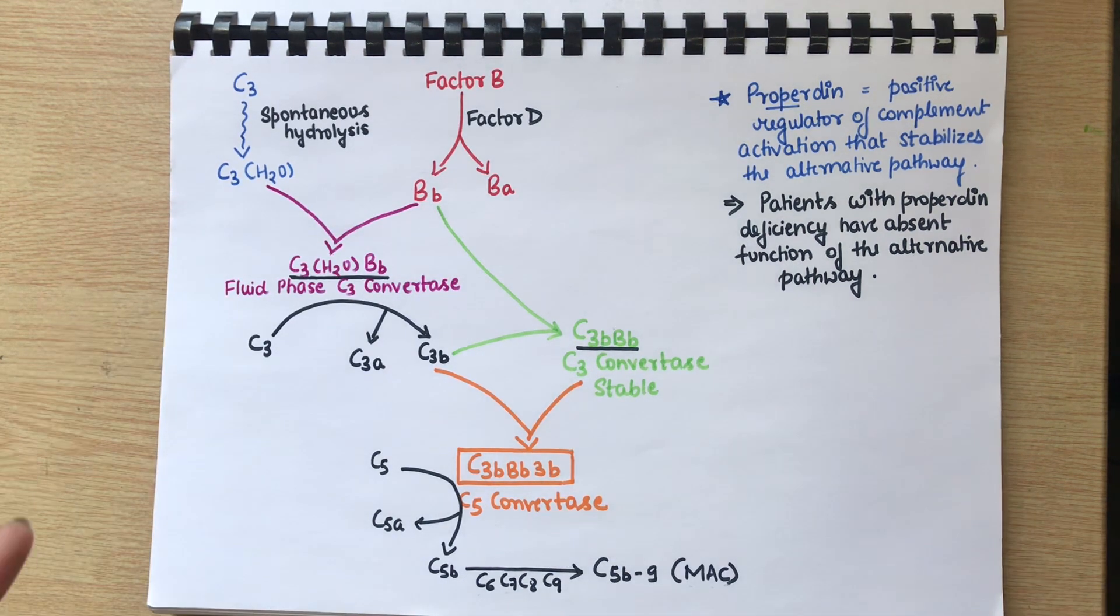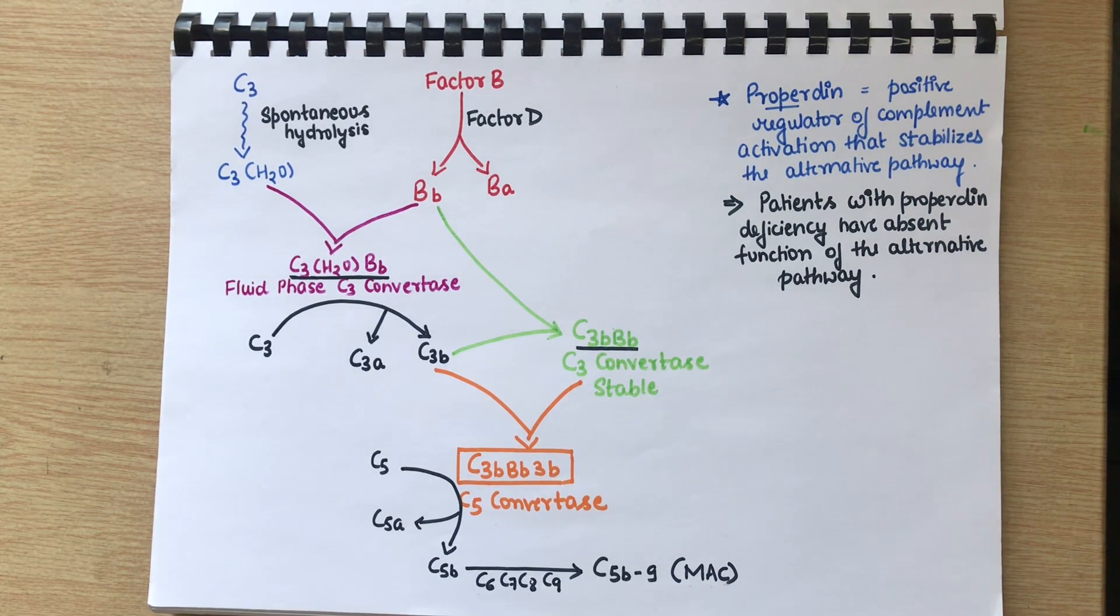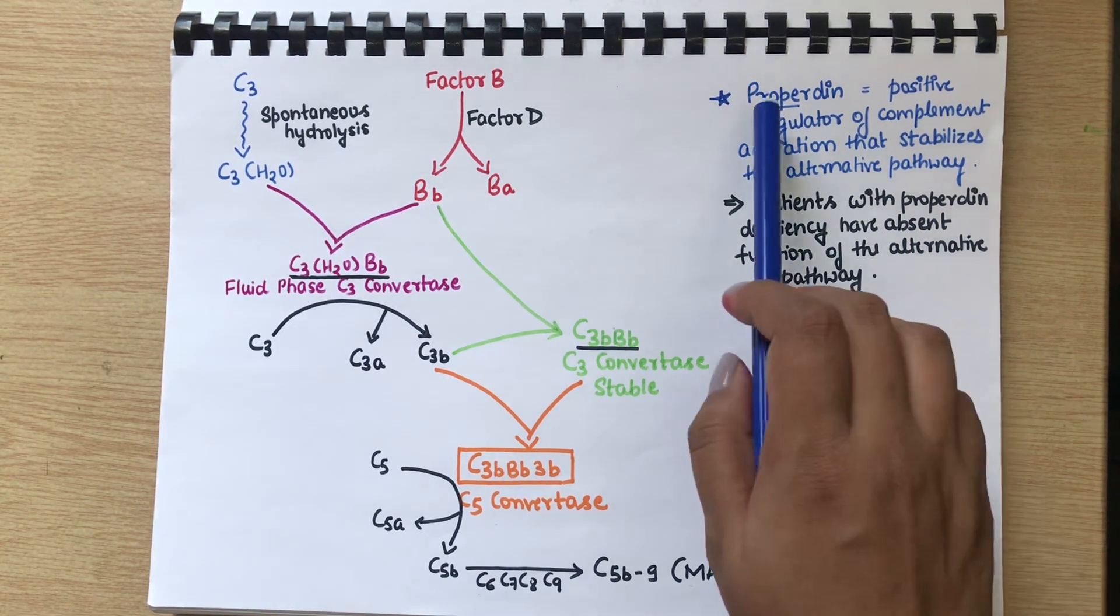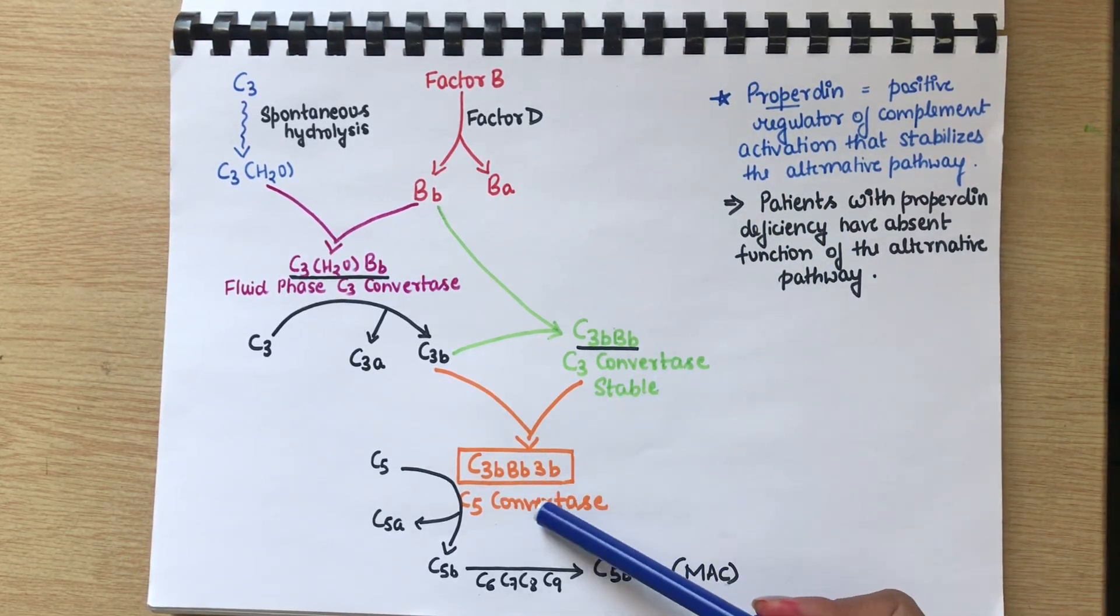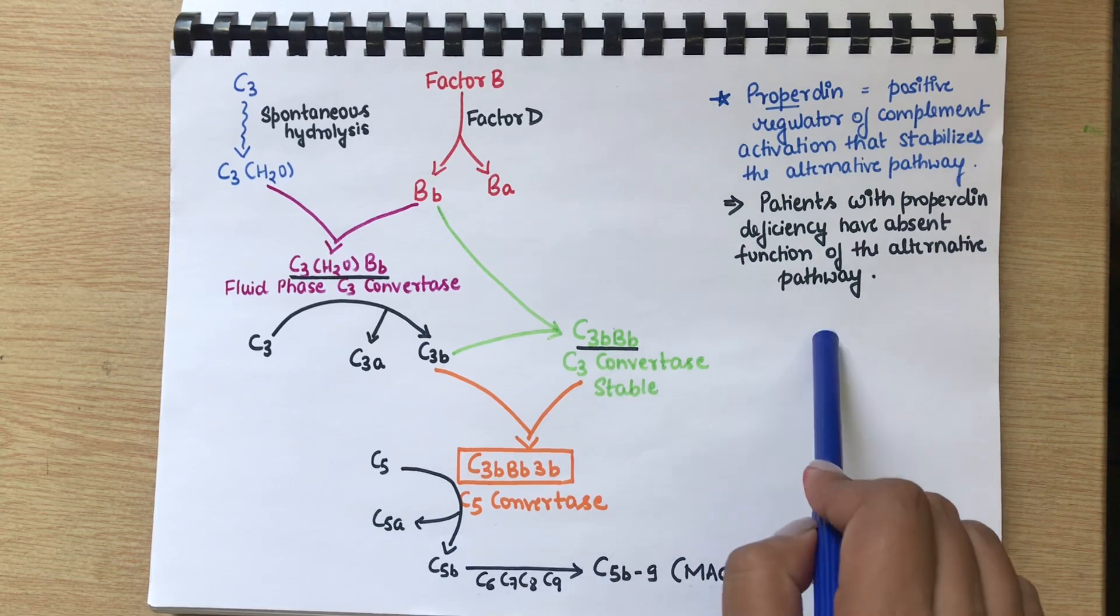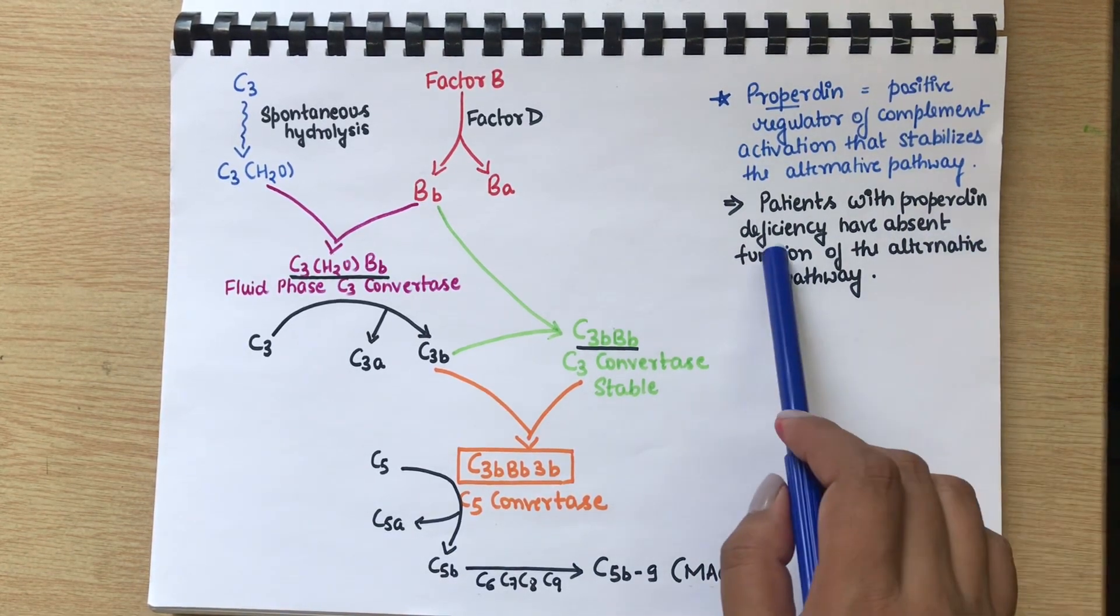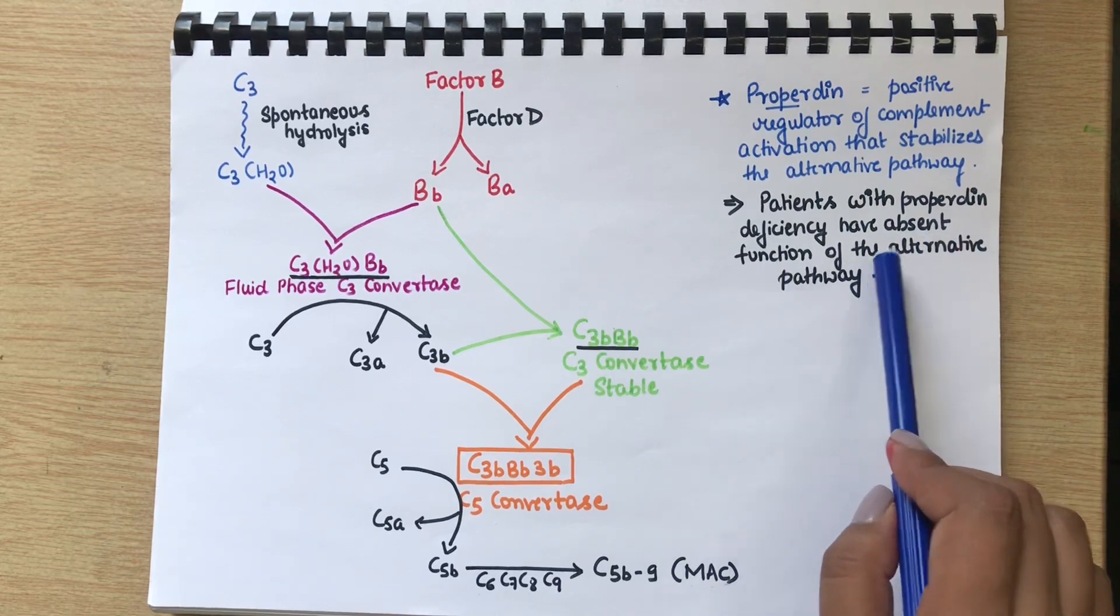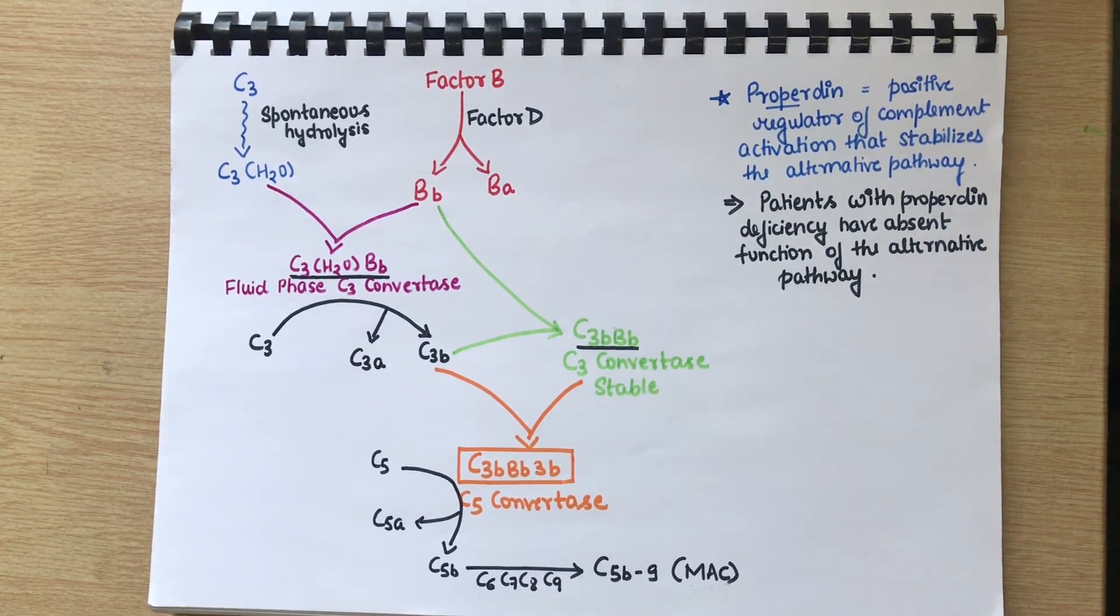Here I want to tell you one clinical correlation. As I told you, properdin is responsible for stabilizing the C3 convertase and C5 convertase. So in any patient who has deficiency of properdin protein, they will have absent function of the alternative pathway. I hope the alternative pathway is clear to you. Thank you so much.